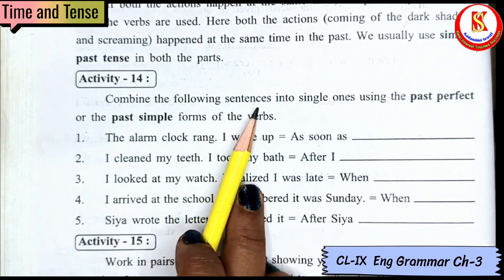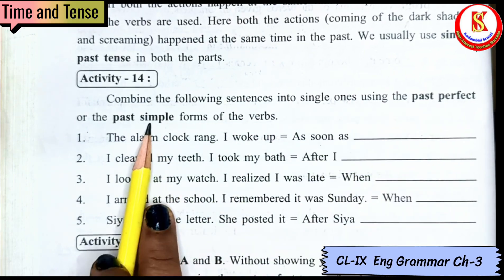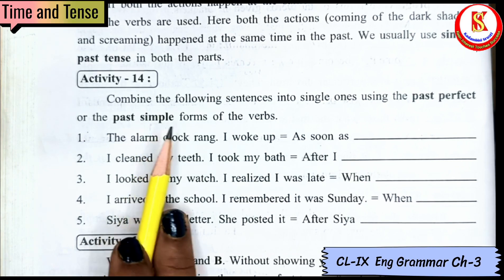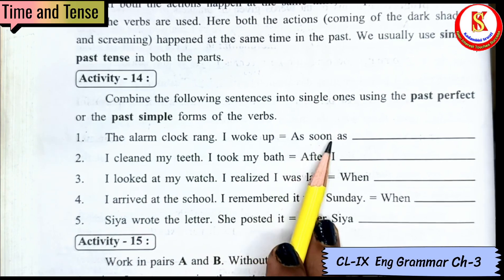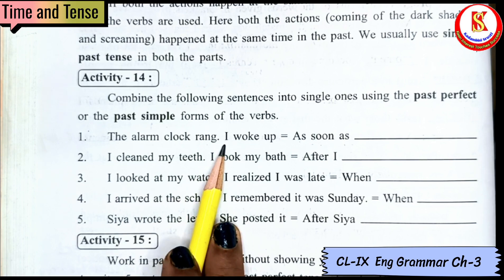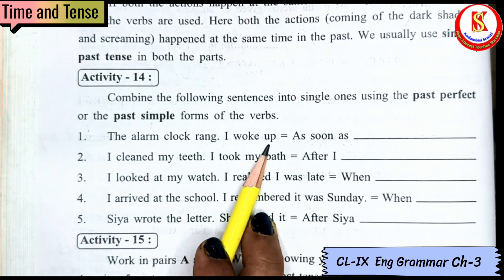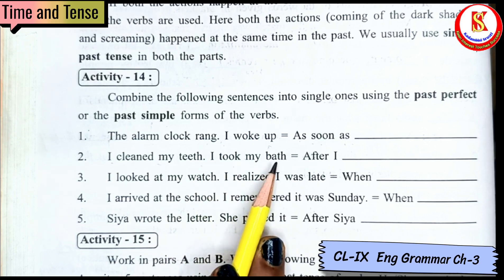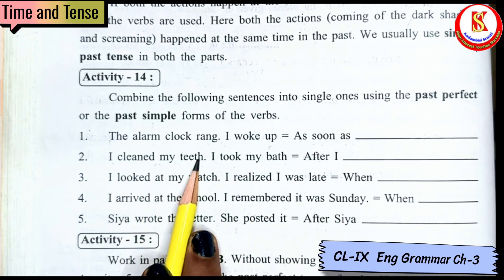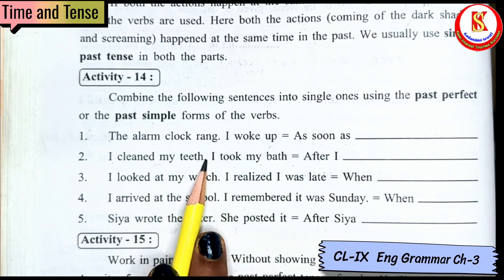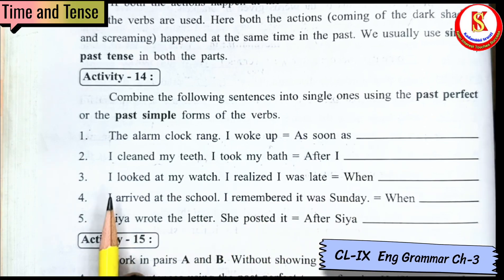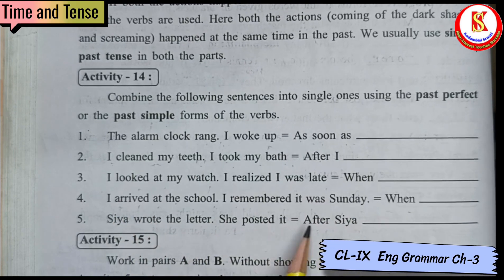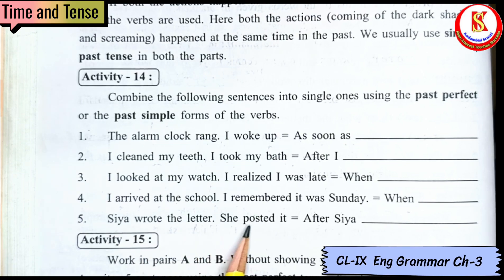Activity 14: Combine the following sentences into single ones using past perfect and past simple. The first action uses past perfect and the second uses past simple. 'As soon as the alarm clock rang, I woke up.' 'After I had cleaned my teeth, I took my bath.' 'When I looked at my watch, I realized I was late.' 'When I arrived at school, I remembered it was Sunday.' 'After Sia had written the letter, she posted it.'